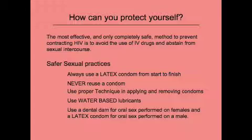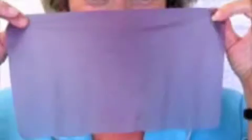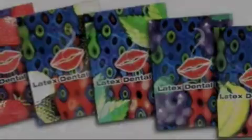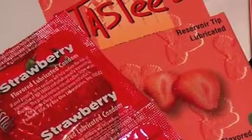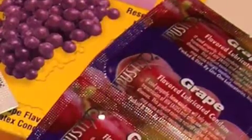If engaging in oral sex, it is important to not let vaginal fluids or semen enter your mouth. For performing oral sex on a female, use a dental dam. Dental dams come in multiple flavors and colors and are sold at pharmacies or other specialty shops. The dental dam should be applied over the vagina and surrounding area from start to finish and should not be reused or flipped over during use. For oral sex performed on a male, there are many non-lubricated flavored condoms available. Use proper technique for applying the condom and use it from start to finish — no exceptions.